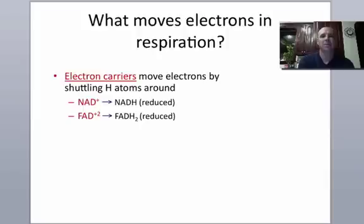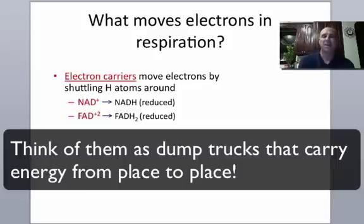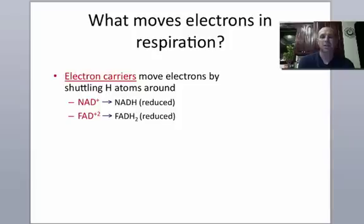One last thing I want to mention is that what moves electrons in respiration in particular is an electron carrier called NAD+. NAD+ whenever it gains electrons or has been reduced is called NADH. FAD whenever it gains electrons is called FADH2. You'll also become familiar in later videos on NADP+ and NADPH, which is actually an electron carrier in photosynthesis.